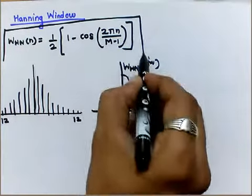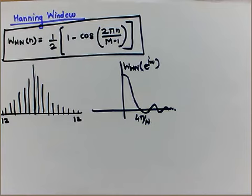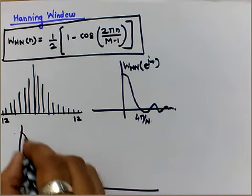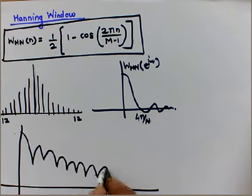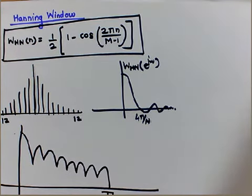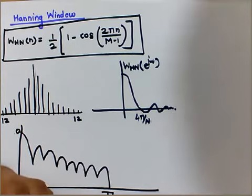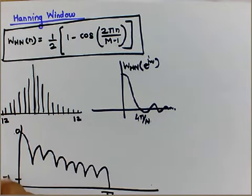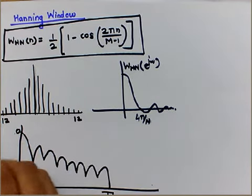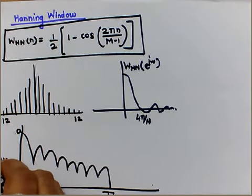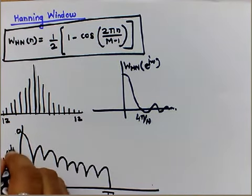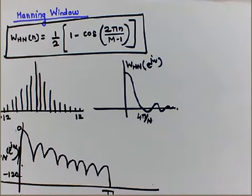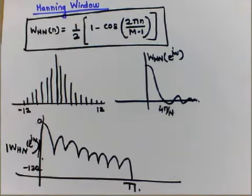This function is quite important for solving numericals based on the Hanning window. Looking at the log magnitude response of the Hanning window up to π, with 0 dB as reference, the magnitude ranges from approximately -1.20 dB to 0 dB. This is the log magnitude of W_HN(e^jω).